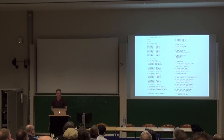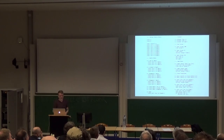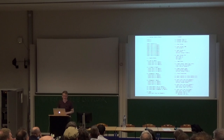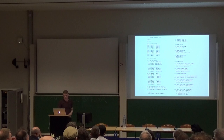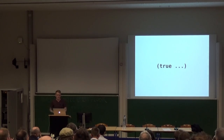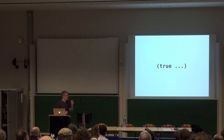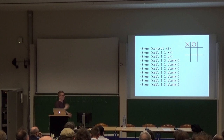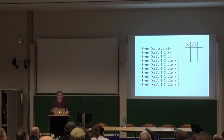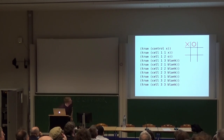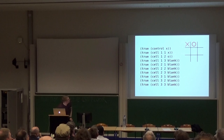This is the entire definition of tic-tac-toe in GDL. Let's start with the basics: how do we represent a state in a game? We define it using this true predicate — anything in true is in a state. So we have this tic-tac-toe board, it's X's turn, so we say true control x. Then we just say that cell 1,1 has an x, cell 1,2 has an 0, and all the rest of the cells are blank. So a state is just a set of facts.